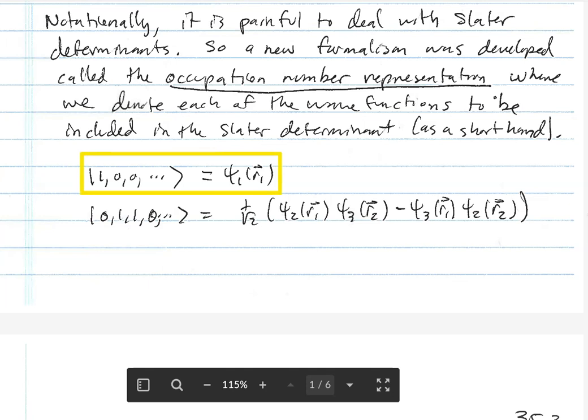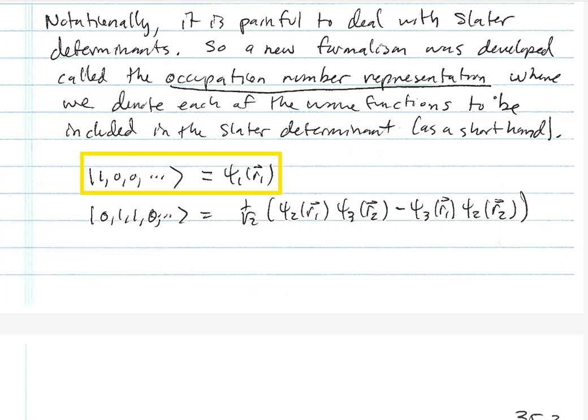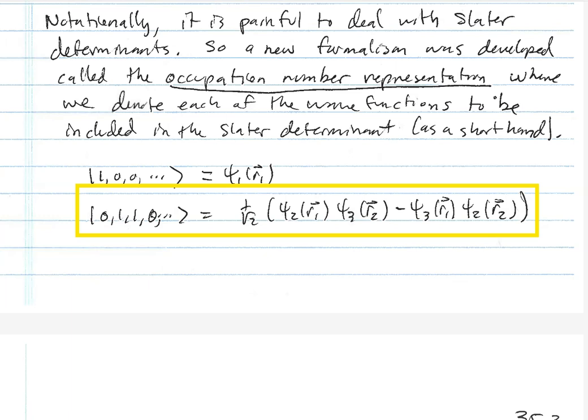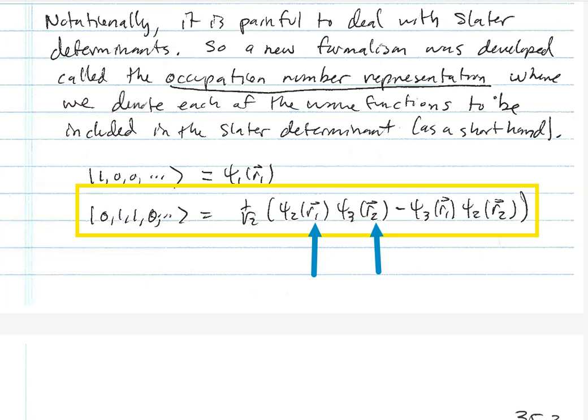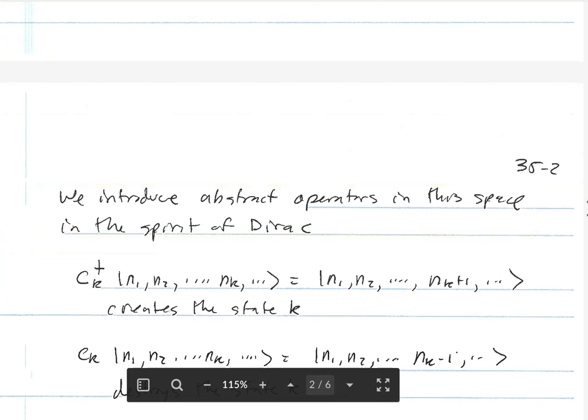The occupation number representation works by denoting each wave function included in the Slater determinant. For example, the state |1,0,0,0,...⟩ would be psi_1 of r1 — a single particle state where the electron is in state psi_1. The state |0,1,1,0,...⟩ would be 1 over square root of 2 times [psi_2(r1) psi_3(r2) minus psi_3(r1) psi_2(r2)]. The indices of psi represent the two occupied states, psi_2 and psi_3; the indices of the arguments represent the two electrons; and the minus sign comes from the change in sign due to the permutation.